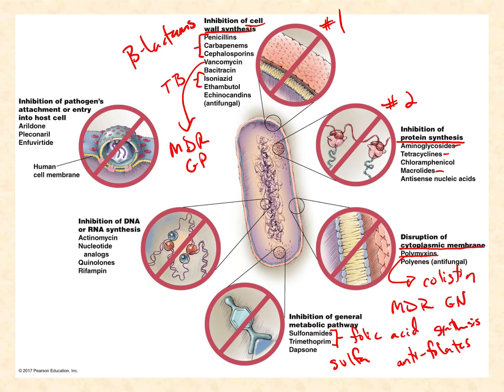The last category is those that inhibit DNA or RNA synthesis. In particular, look at the quinolones and rifampin. Rifampin knocks out RNA synthesis, while the quinolones like Cipro knock out DNA replication and DNA synthesis. So we've got five main antibiotic targets: number one, cell wall synthesis; number two, protein synthesis; and then cytoplasmic membrane disruptors, sulfa drugs targeting the folic acid synthesis pathway, fluoroquinolones inhibiting DNA replication, and rifampins inhibiting transcription.